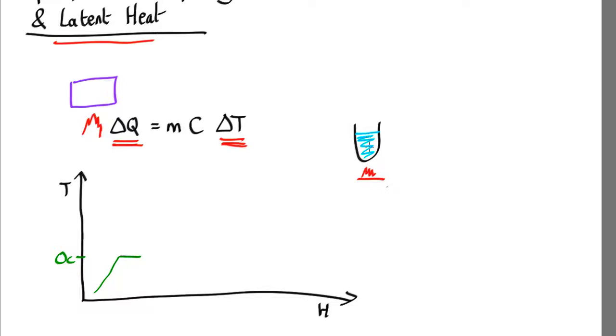What will happen is it'll go from being 100% ice, 0% water to maybe 50% ice, 50% water, until eventually everything's melted and it's 100% water.